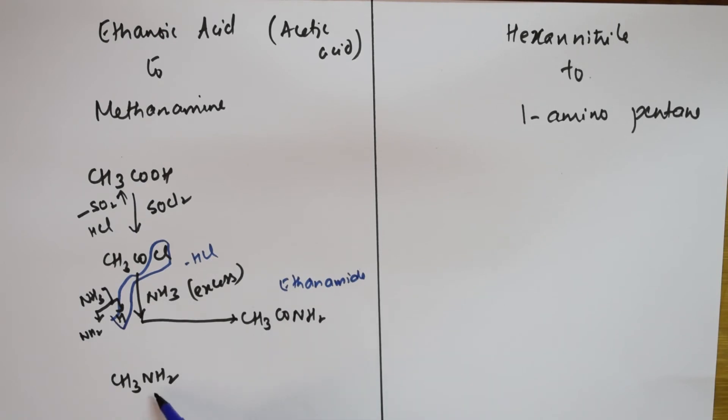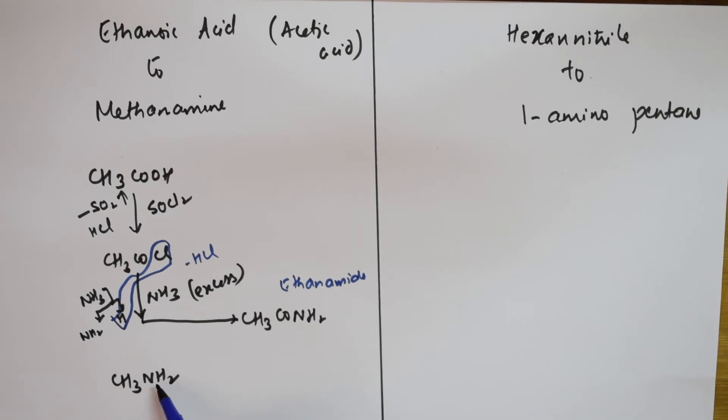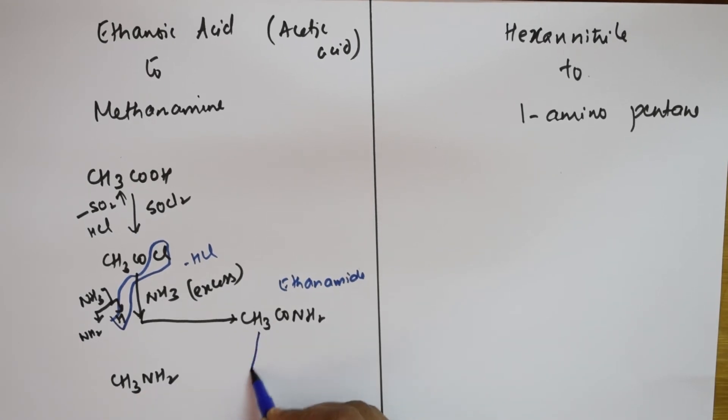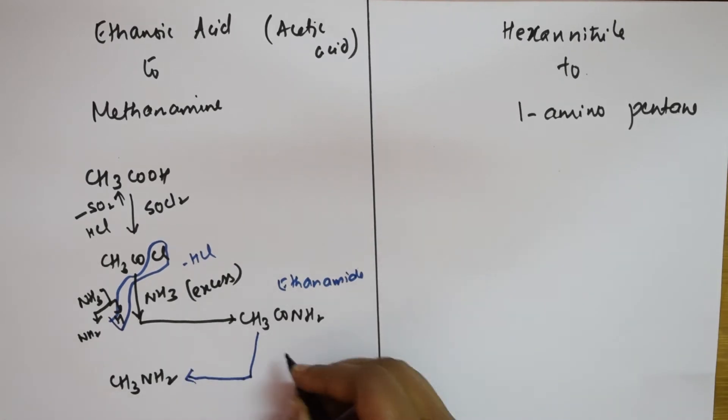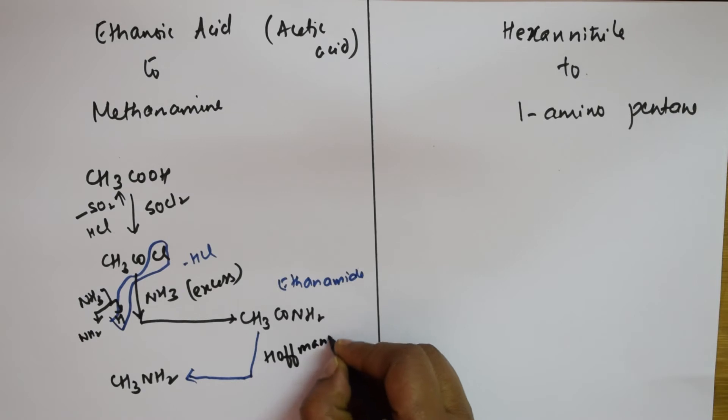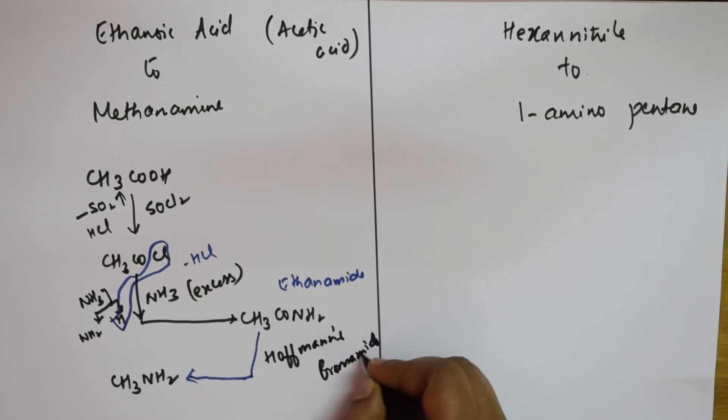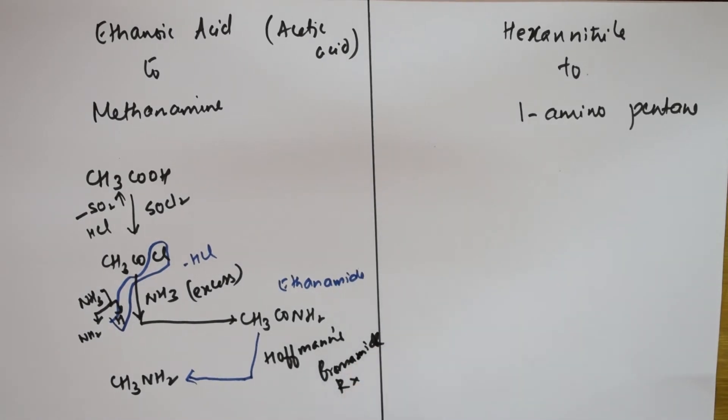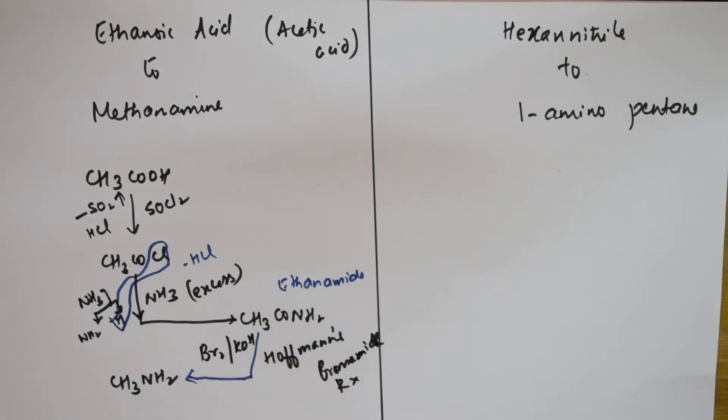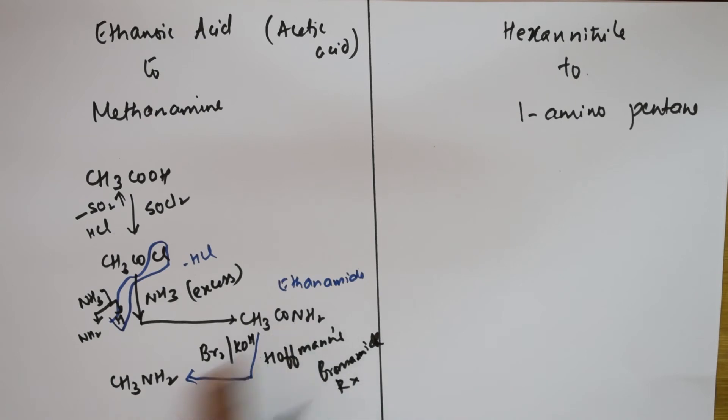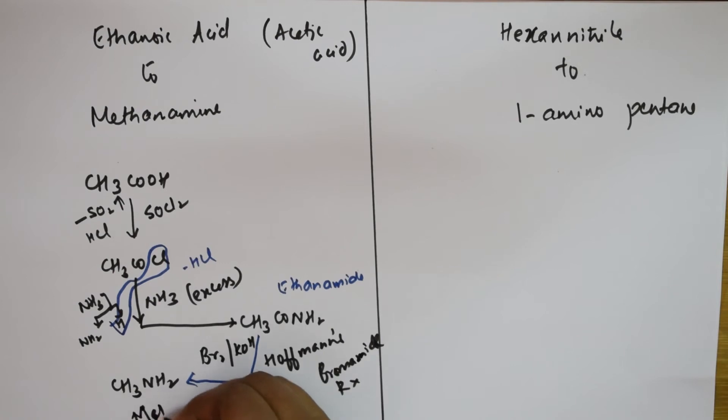Now to this ethnamide, what is extra? CH3 is still there, amine is there, I need to take out the CO. So what am I going to do? The process of preparing primary amines with one carbon less is nothing but Hoffman's bromamide reaction. This is two carbons, this is one carbon. So comfortably I'm going to use Hoffman's bromamide reaction. What is the condition? You need to use bromine in the presence of KOH. Automatically one carbon less you get—this is methyl amine, one carbon less.